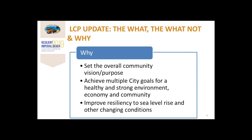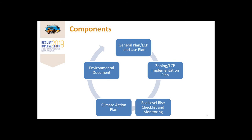The update sets the overall community vision and purpose to help achieve multiple city goals for a healthy and strong environment, economy, and community, and to improve resiliency to sea level rise and other changing conditions. The local coastal program includes five major components: the general plan land use plan, amendments to the zoning ordinance to form the LCP implementation plan, a sea level rise checklist and extensive monitoring program, a climate action plan, and an environmental document the city will adopt.